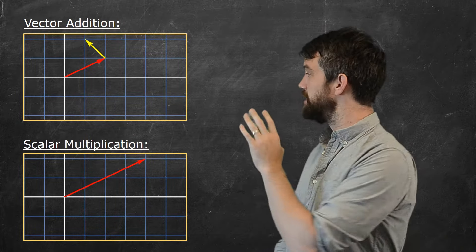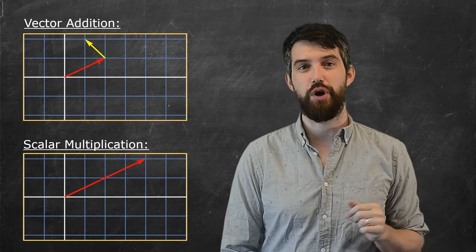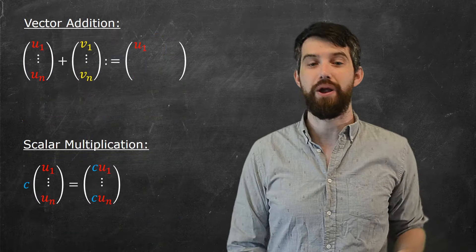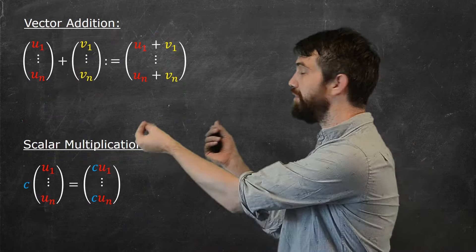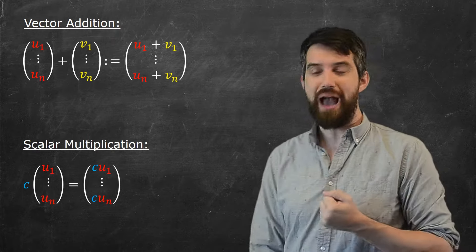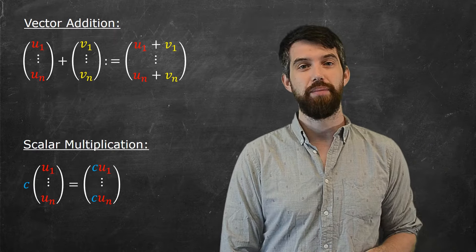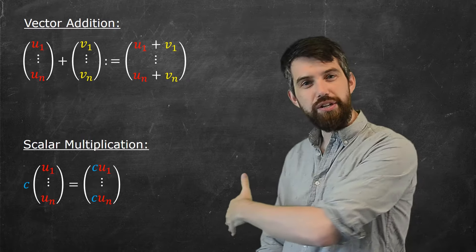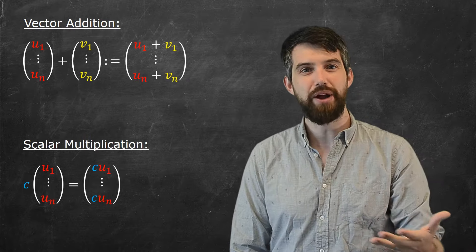Now, this was the geometric way of looking at these different operations, but there was also an algebraic way. We could say, for example, that if you had two different vectors defined algebraically as lists of numbers, that was how you added them, and this was how you multiplied them by a scalar. Now, these operations, whether they were algebraic or geometric, they obeyed a list of rules.